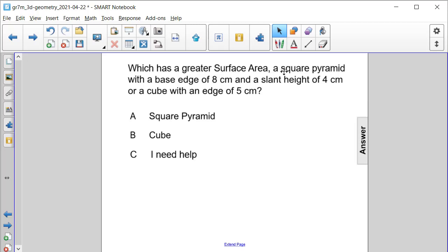Which has a greater surface area, a square pyramid with a base edge of 8 centimeters and a slant height of 4 centimeters, or a cube with an edge length of 5 centimeters?